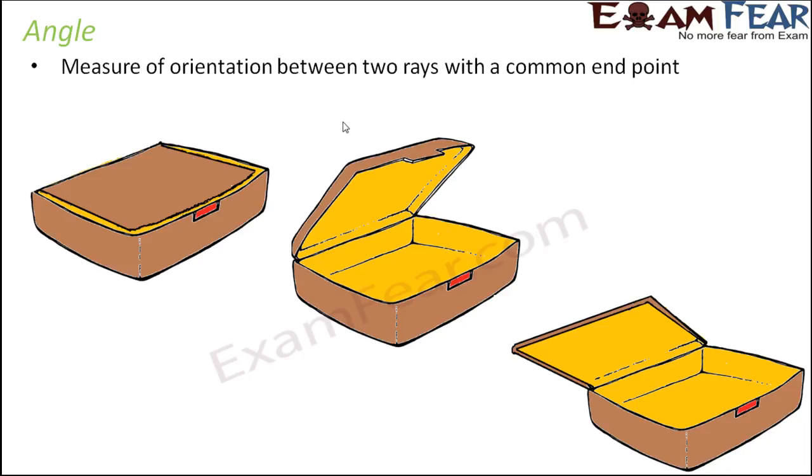So we all know what an angle is. An angle is a measure of orientation between two rays with a common end point. To understand the concept of an angle, the best example to consider would be a lunchbox or any box for that matter. The moment you open the box, what happens? You see that the orientation between the lid, that is the top surface, and the bottom surface keep changing.